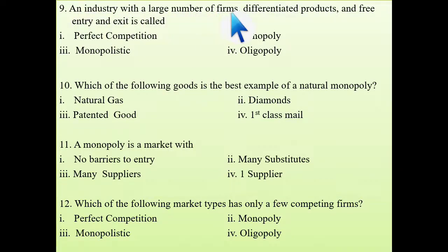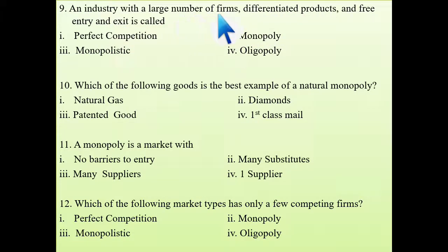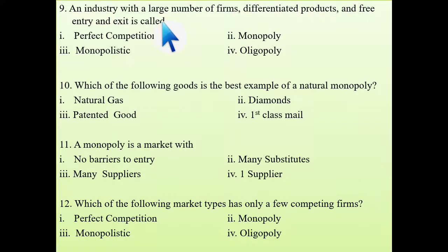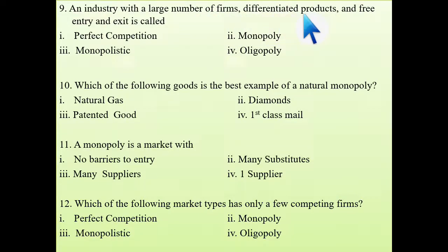Ninth question: an industry with a large number of firms, differentiated products, and free entry and exit — what market is this? Large number of firms and free entry and exit are characteristics of perfect competitive market, but differentiated products means it is a monopolistic market, because it is a combination of perfect market and monopoly market.